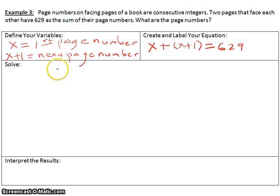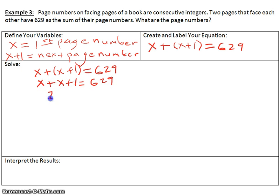Now we want to solve this. We write out our equation again. We would have X plus the parenthesis X plus 1 equals 629. We could drop these parenthesis because we cannot do anything inside of it. So we add X plus X plus 1 equals 629. Now we combine like terms. X plus X is 2X plus 1 equals 629.